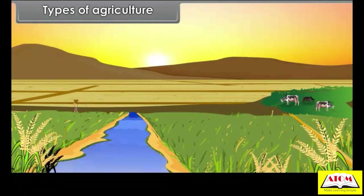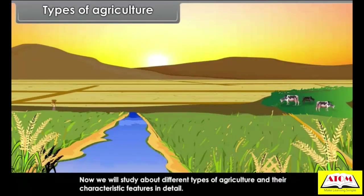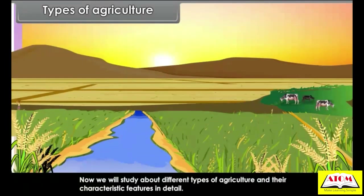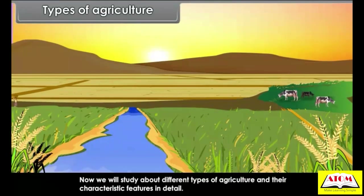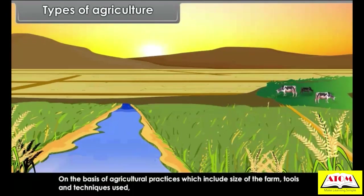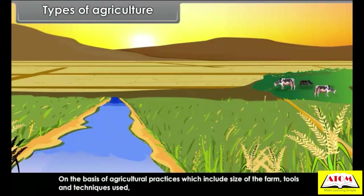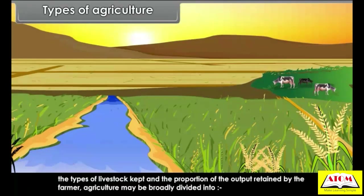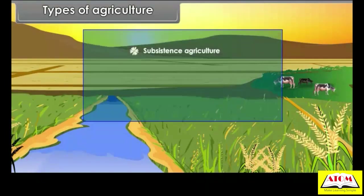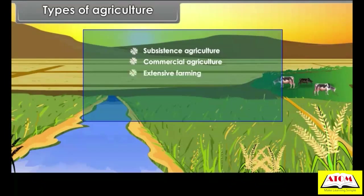Now we will study about different types of agriculture and their characteristic features in detail. On the basis of agricultural practices — which include size of the farm, tools and techniques used, the types of livestock kept, and the proportion of the output retained by the farmer — agriculture may be broadly divided into subsistence agriculture, commercial agriculture, extensive farming, mixed farming, and plantation agriculture.